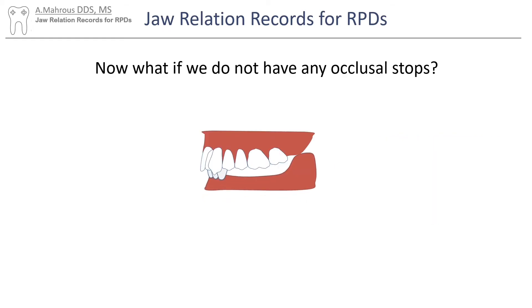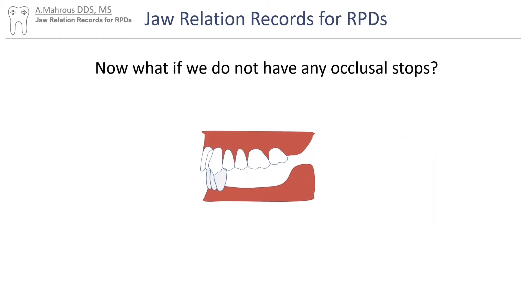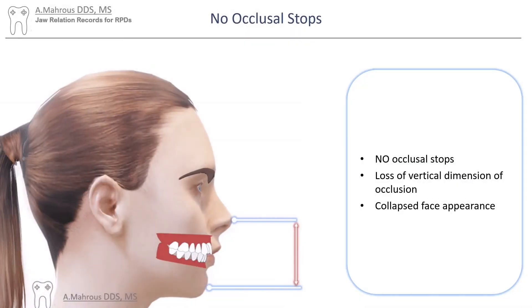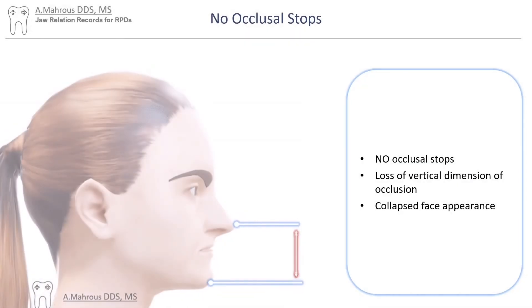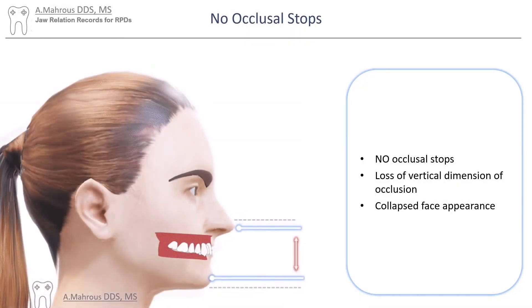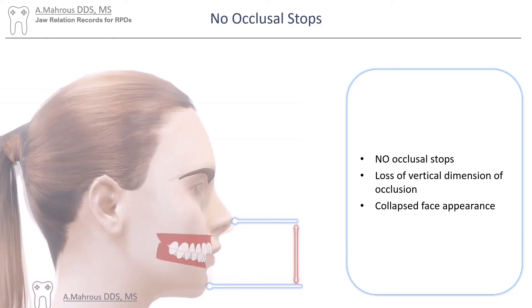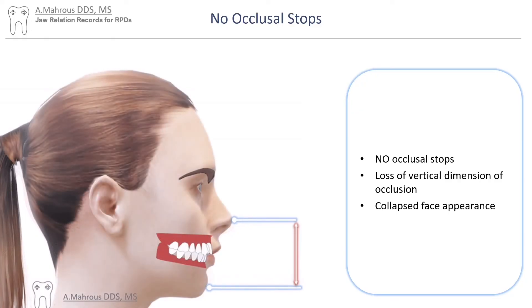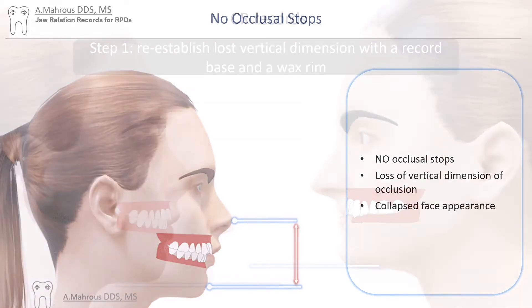Now let's explore how to mount a case that has no remaining occlusal stops. In a case like this, the patient has no occlusal stops, has a loss of vertical dimension of occlusion, and a collapsed facial appearance.